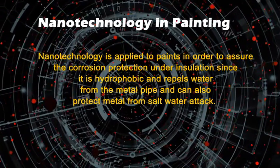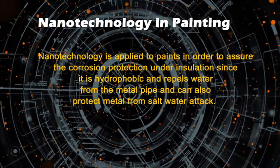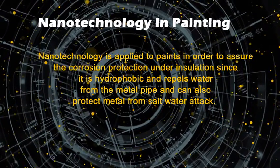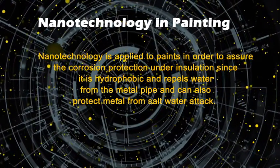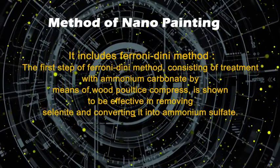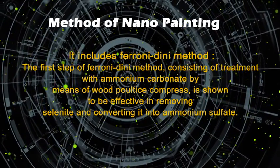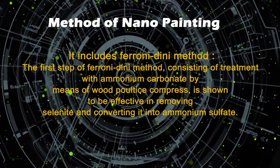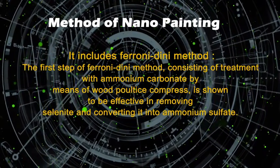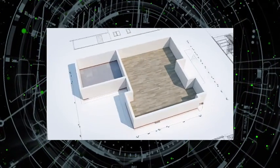Sandhya, do you know more materials and how to make them? Yes, I know how to make paint. Nanotechnology is applied to paints in order to assure corrosion protection and insulation, since it is hydrophobic and repels water from metal pipes and can also protect metal from salt water attack. It includes the Ferroni-Daini method. The first step consists of treatment with ammonium carbonate by means of wood pulp compress. It has been shown to be effective in removing selenite and converting it into ammonium sulphate.